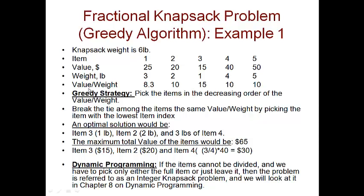The first thing we do is determine the value per weight. You're given the value in dollars and weight in pounds — just divide value by weight. So 25/3 = 8.3, 20/2 = 10, 15/1 = 15, 40/4 = 10, and 50/5 = 10. Now rank these items in order of decreasing value per weight.